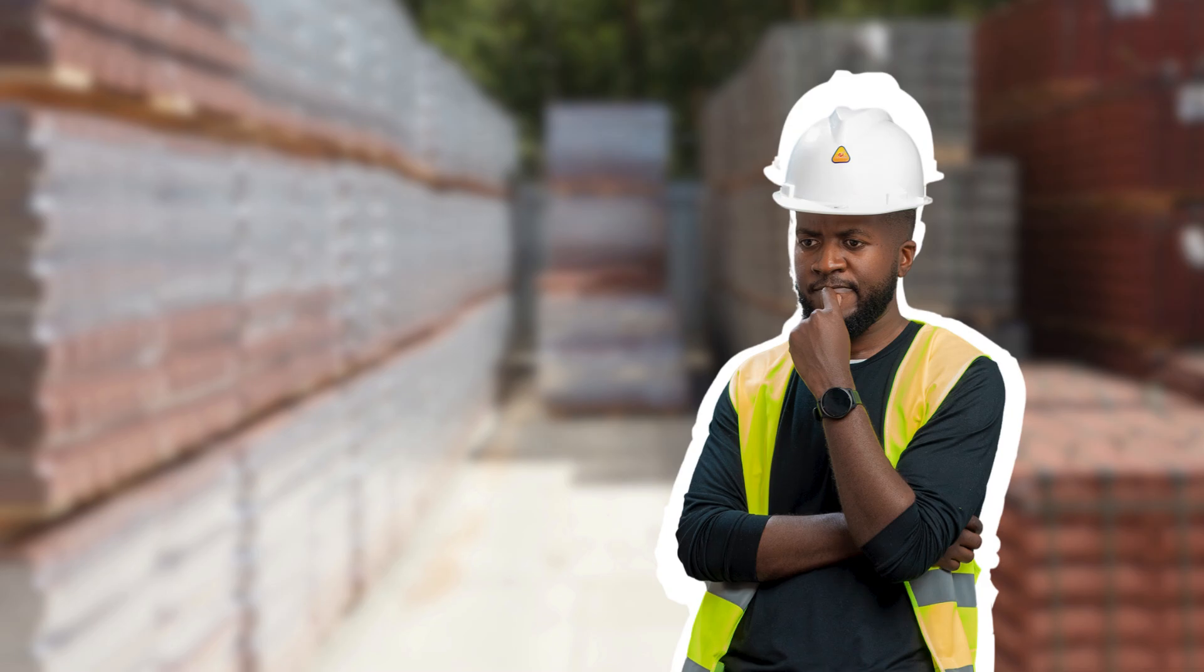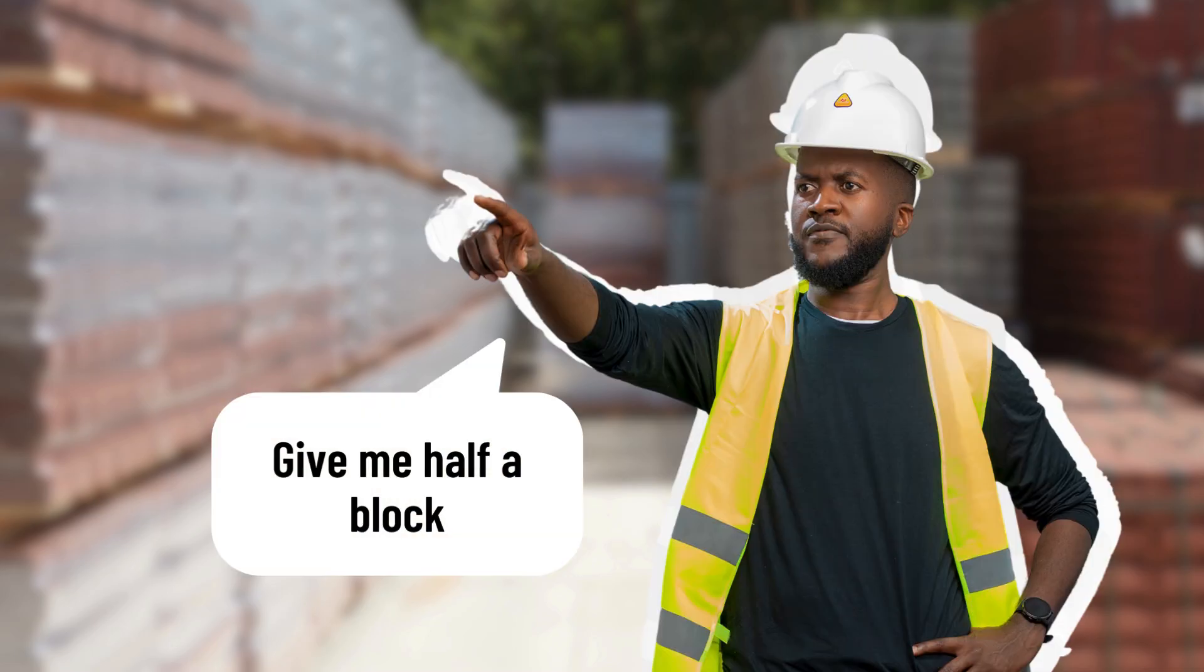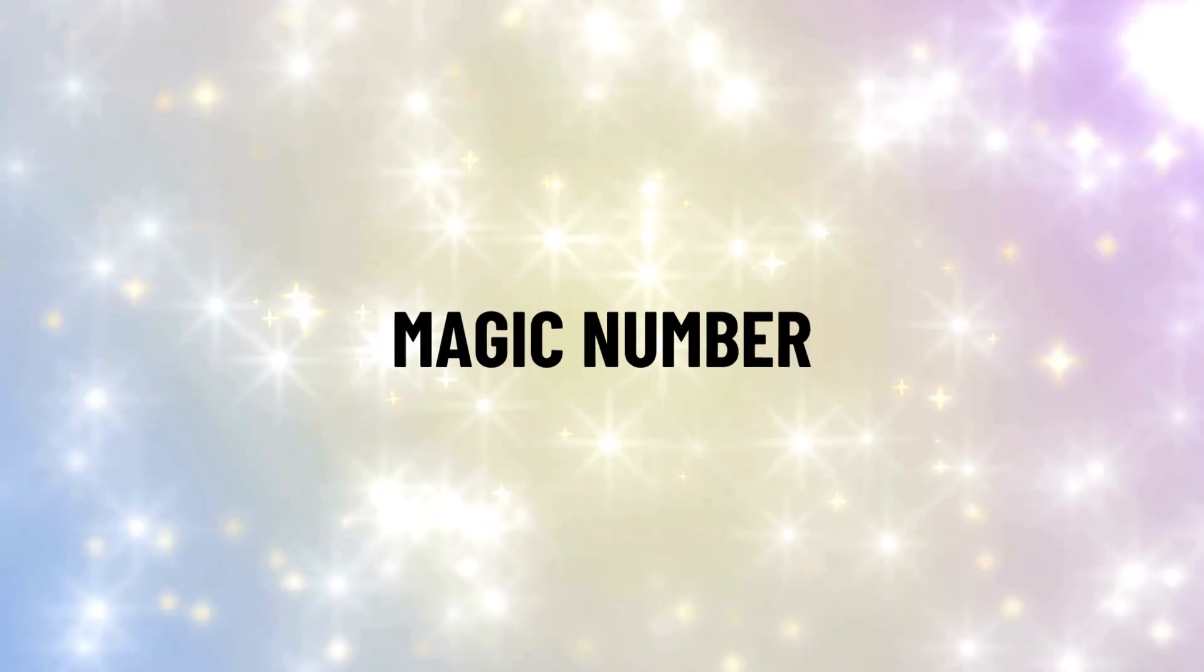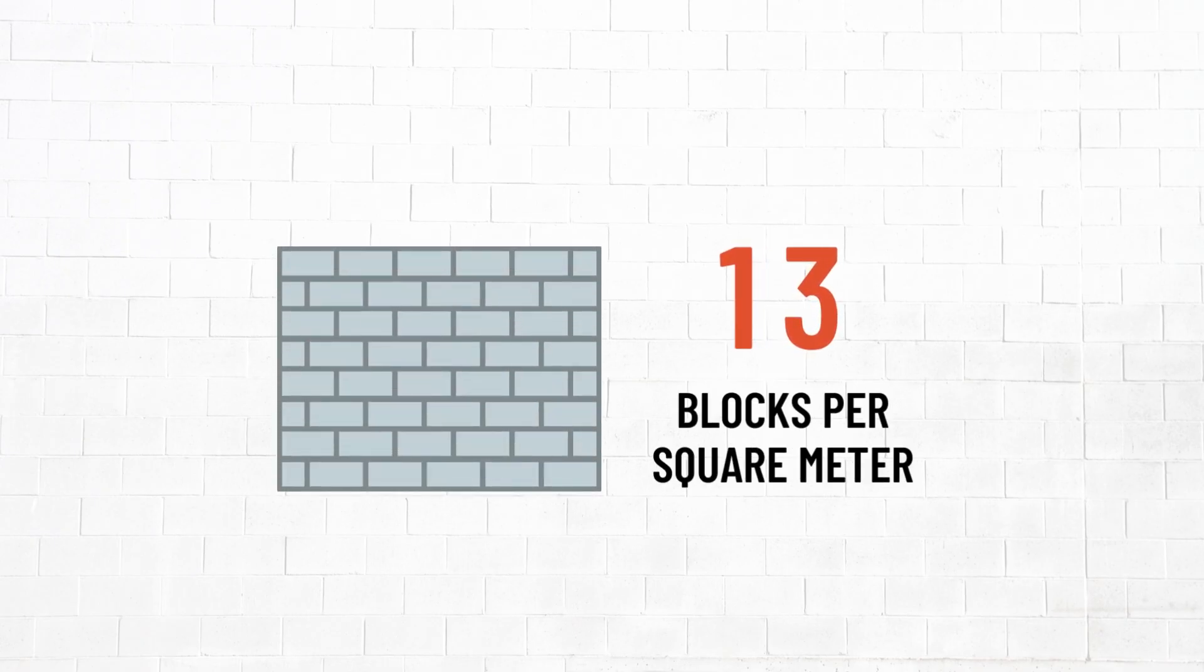Now we can't go to the store and ask to buy 12 and a half blocks. So let's round it up to 13 blocks per square meter. This is our magic number, which we must always remember. It takes 13 blocks to fill 1 square meter.